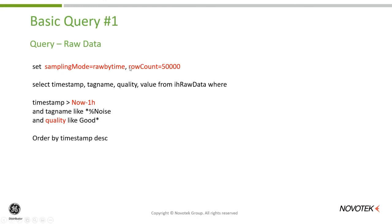The query is relatively straightforward: give me the timestamp, tag name, quality, and value from the IH Raw Data table. It understands both absolute and relative times — in this case, bring back all data starting from one hour ago. There's also a concept of quality, so I can ensure I only bring back good-quality data, and very much like SQL, I can add an ORDER clause.